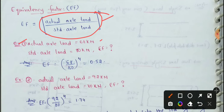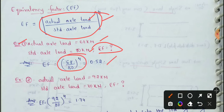In this example, the actual axial load is 68 kN and the standard axial load is 80 kN. The equivalency factor is calculated as (68/80) raised to the power of 4, which gives a value of 0.52. This is the equivalency factor for this case.